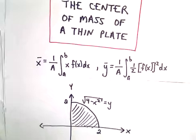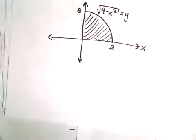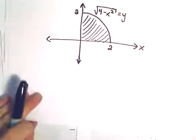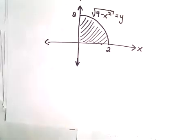Alright, so here we're going to do one more example of finding a center of mass. Here we've got the region bounded by the curve square root of 4 minus x squared.